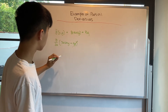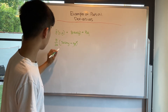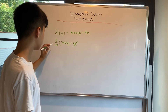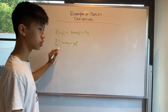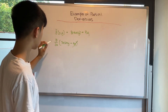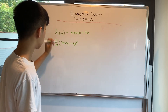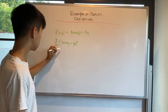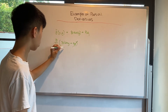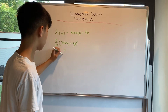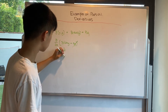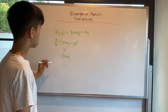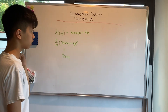Well, 5y cancels out because 5y is treated like a constant, and the derivative of constants is just zero. And then we cancel out x because the derivative of x is just one, treating 3·sin(y) like a constant. So our partial derivative would just be 3·sin(y).